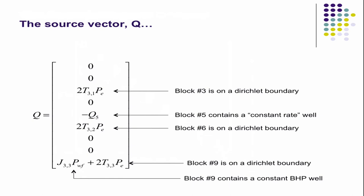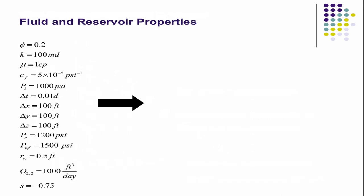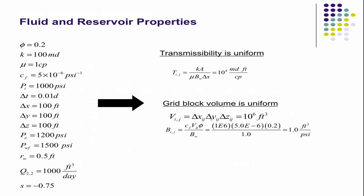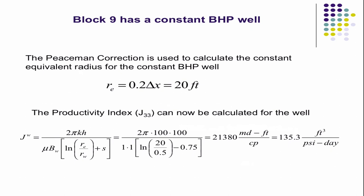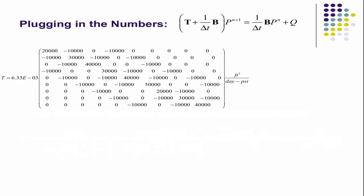By the way, this example will be posted to Canvas a little bit later. So if you plug in these properties and assume a uniform transmissibility, you get these equations. Block nine, that's the equivalent radius. That's the productivity index. You plug all the numbers in.